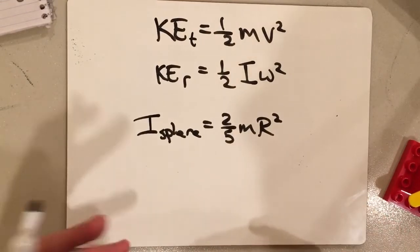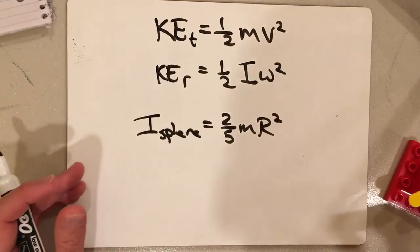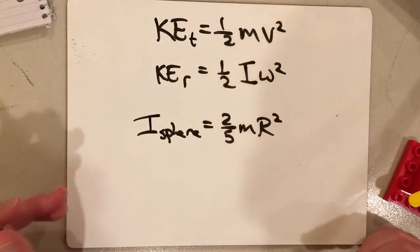And if you have a different shape, like a hollow cylinder, there's a different formula. Those formulas are in the content section of the homework. They're also on the formula sheet.